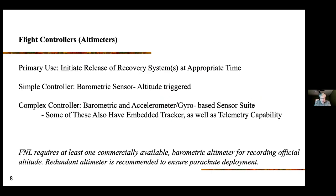Now we're going to talk about flight controllers. The primary reason you want a flight controller is to release the recovery system at the appropriate time in the rocket's flight. If you're doing a single parachute, you want to release it right at apogee — that's the highest point above ground, where the rocket arcs over from ascent to descent. It's the slowest the rocket will be traveling, so it's the best time to release a parachute without overstressing the recovery lines.